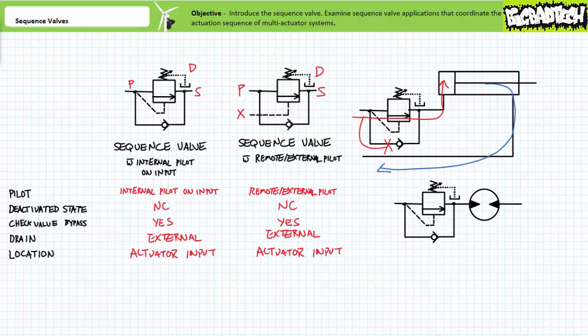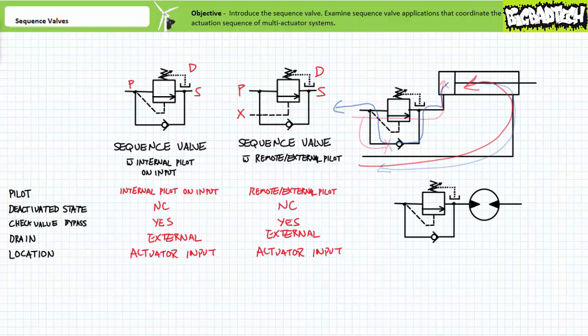Similar to guidance issued in the flow control methods lecture, it is not necessarily the valve or actuator port that determines the sequence valve's orientation, but rather the check valve bypass that does so. For example, this sequence valve is on the input of the cap end of this double acting cylinder. Only when pressure on the input port exceeds the set value does the sequence valve open and extend the cylinder. When flow switches direction, the sequence valve is bypassed through the check valve bypass, and the cylinder retracts with no pressure precondition.